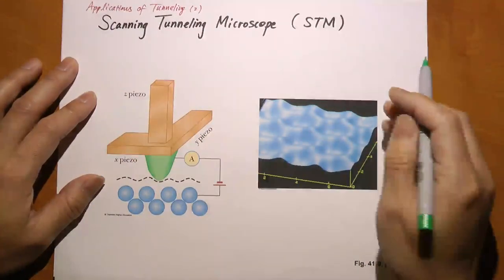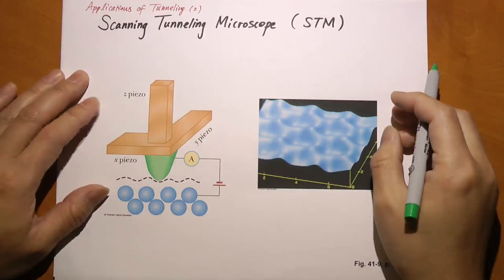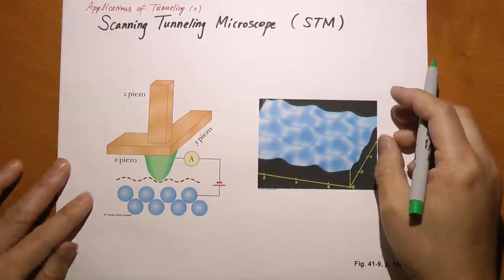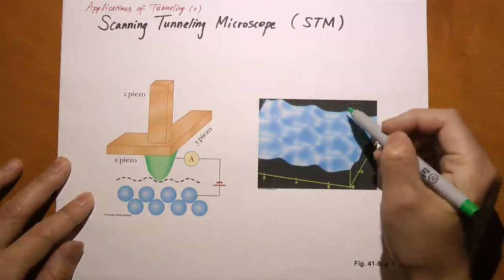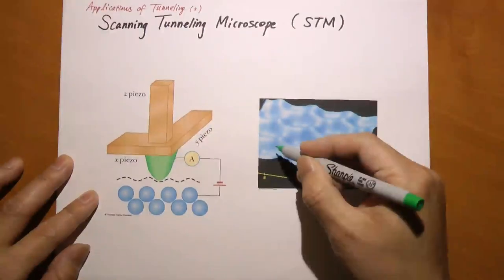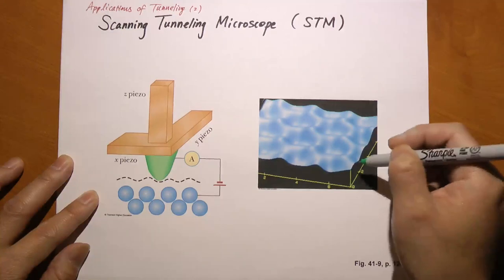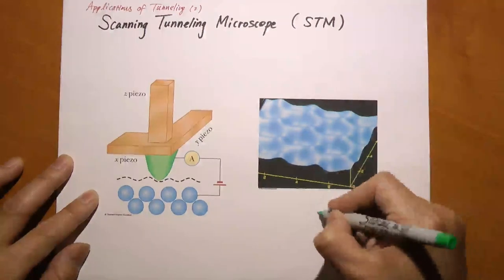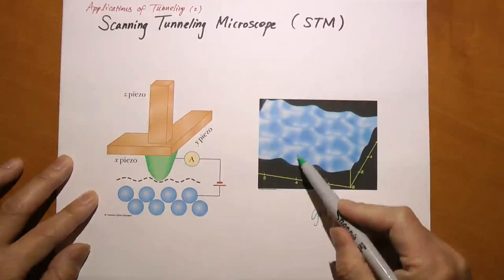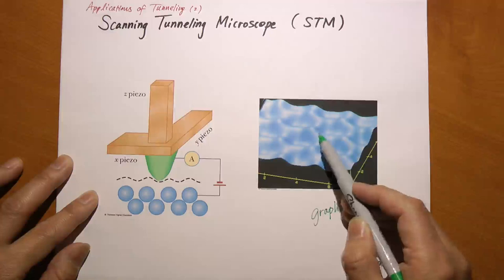Another application of the tunneling theory - this time we actually made it into a device. It's called a scanning tunneling microscope, or STM. With this microscope, we are able to map out - here you see this picture - this is a computer generated picture of the STM imaging of the surface of graphite. You can almost see individual atoms; you see this hexagonal structure of graphite.